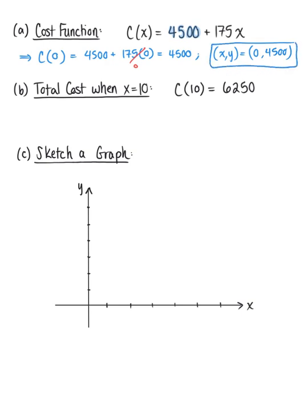And we have the same thing in part B. We have when x is 10 units, the total cost is $6,250. So we have another ordered pair on this graph. When x is 10, y is $6,250. So we now have two ordered pairs on our line for the cost function.